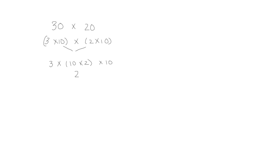So 10 times 2 is 20. Let's look at 3 times 20 times 10. We can now easily multiply 20 times 10, which is 200, and 3 times 200. We know we can multiply 3 times 2 and get 6, and then 10 times 10 is 100. So that would be 600.